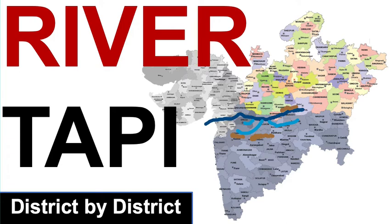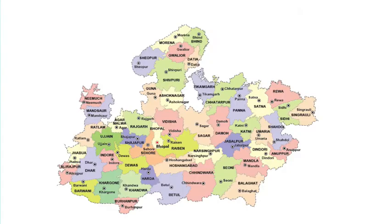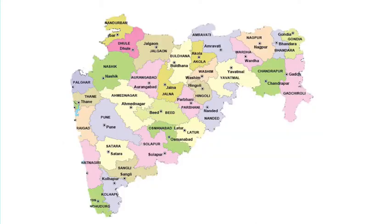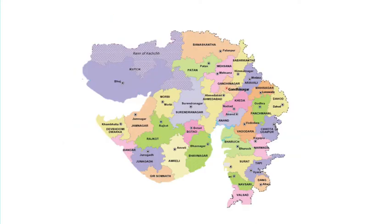River Tapi flows in three states: Madhya Pradesh, Maharashtra and the state of Gujarat.